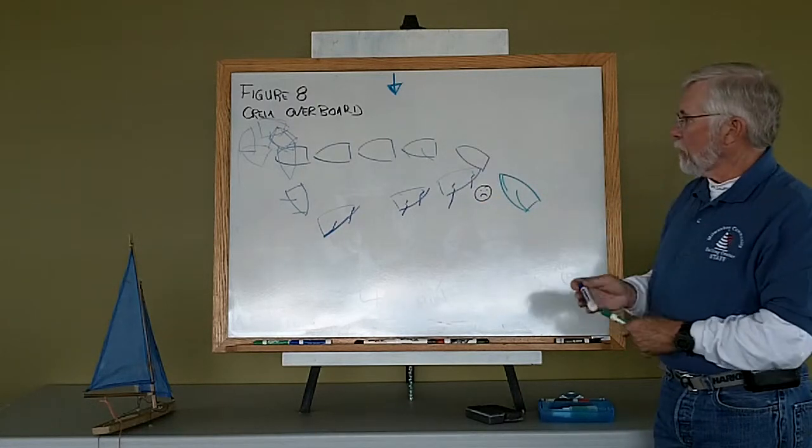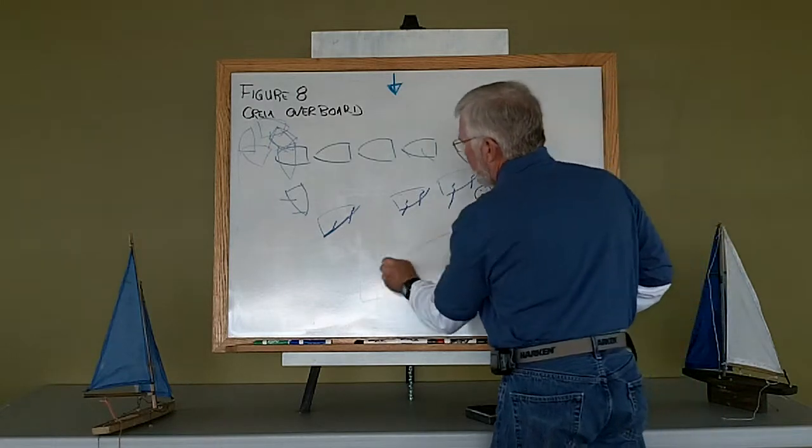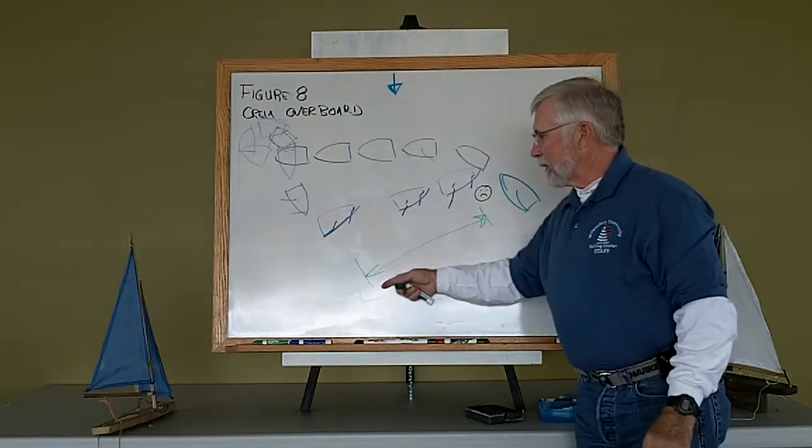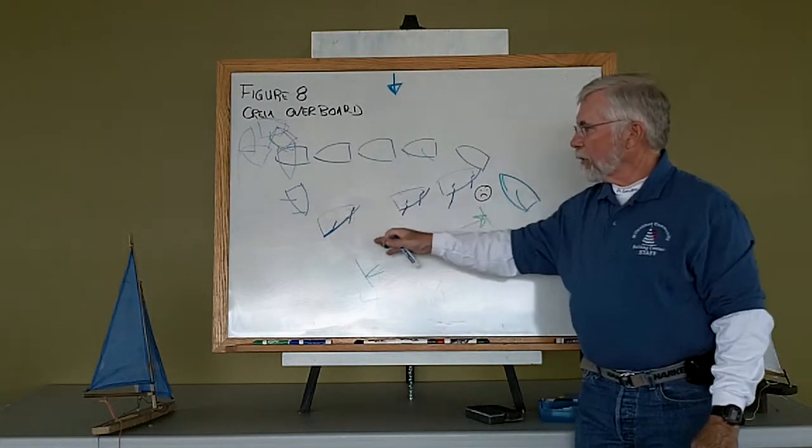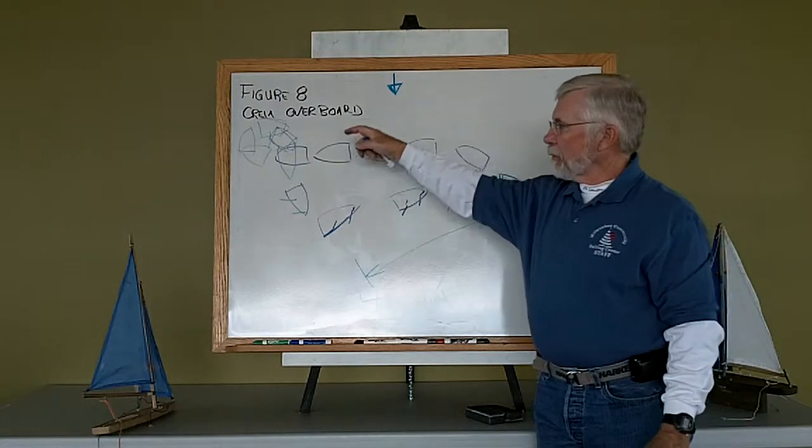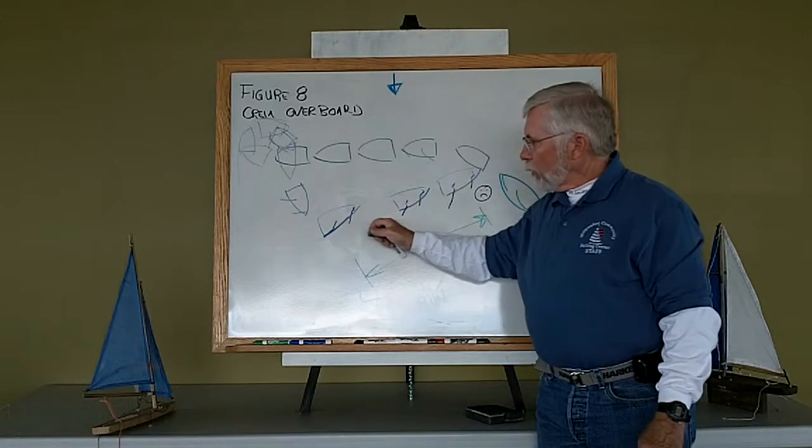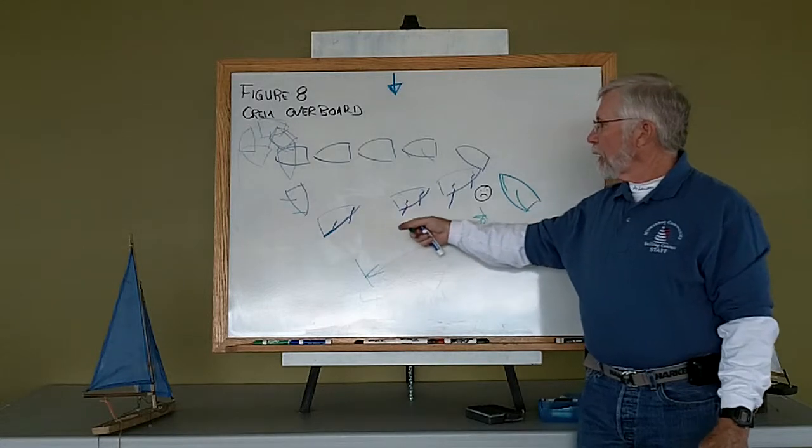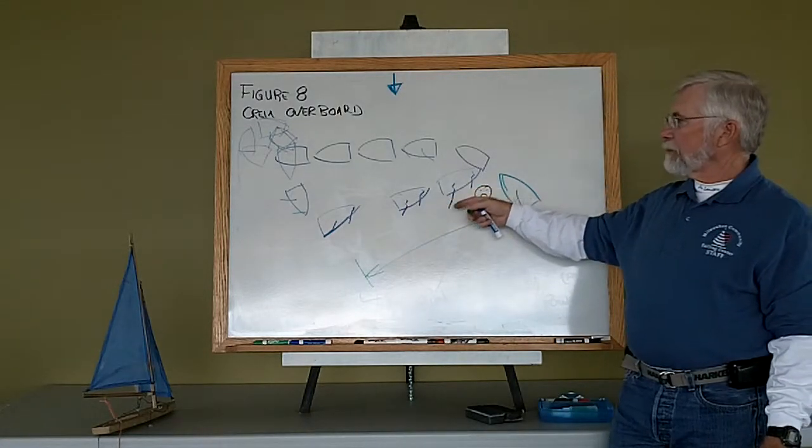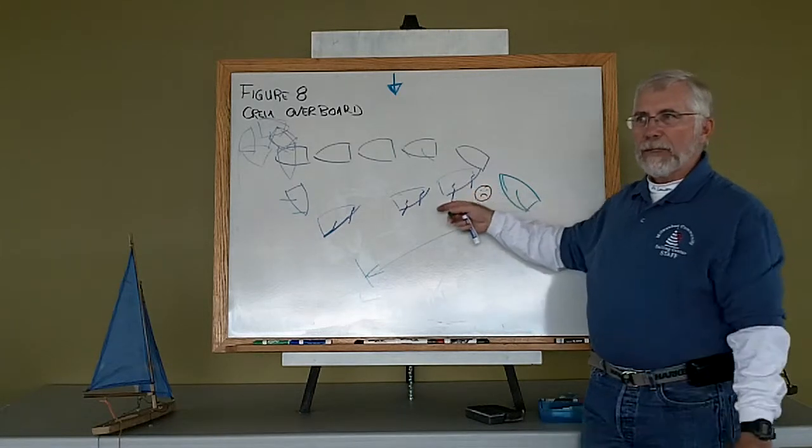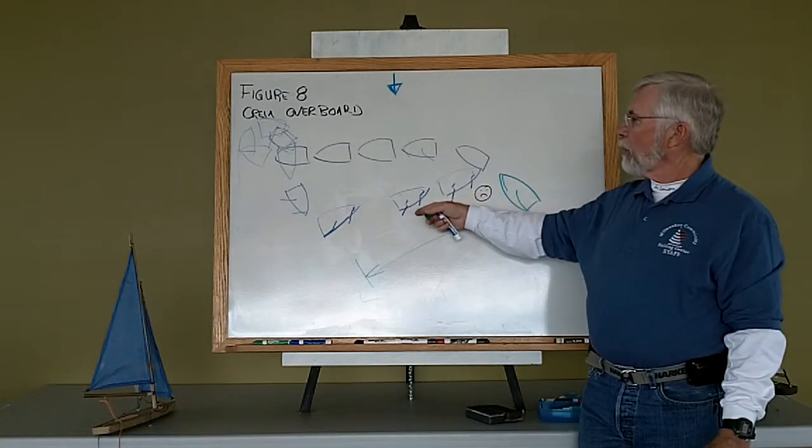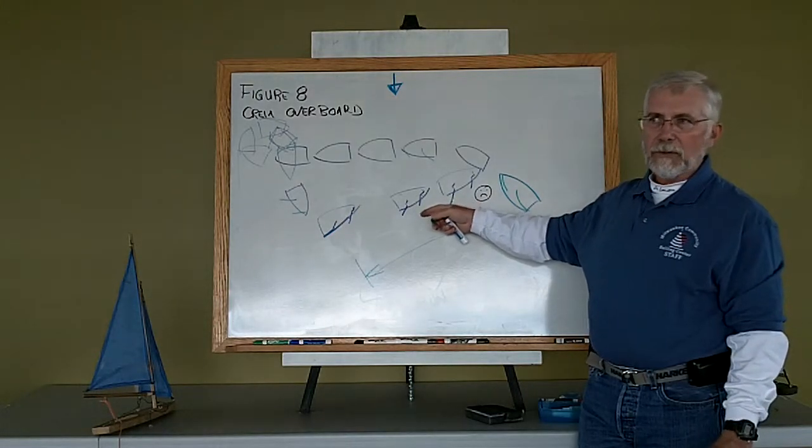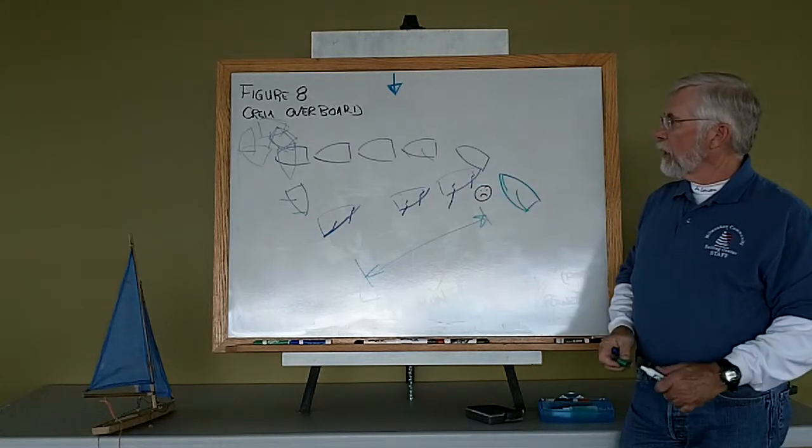The critical part of this is having enough room distance to be able to slow the boat once we turn up in our close reach. So as we come down in our broad reach, when we turn the boat to come up, we need to immediately release our sails to depower the boat so that we can come up slowly. If we've already got ourselves going too fast halfway through the process, it's going to be very difficult to slow enough to come to a stop in order to pick up our crew.